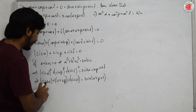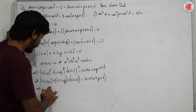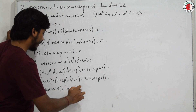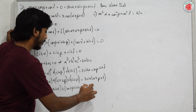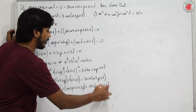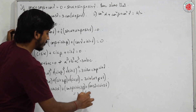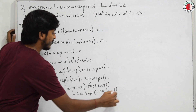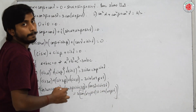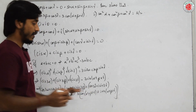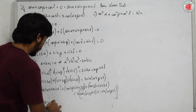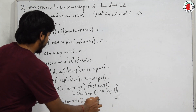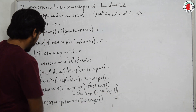Expanding: cos(3α) + i sin(3α) + cos(3β) + i sin(3β) + cos(3γ) + i sin(3γ) = 3(cos(α+β+γ) + i sin(α+β+γ)). Taking only the real parts gives cos(3α) + cos(3β) + cos(3γ) = 3cos(α+β+γ).